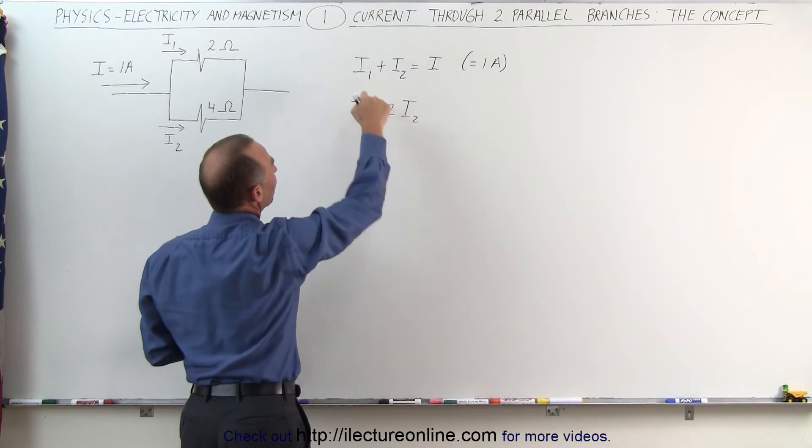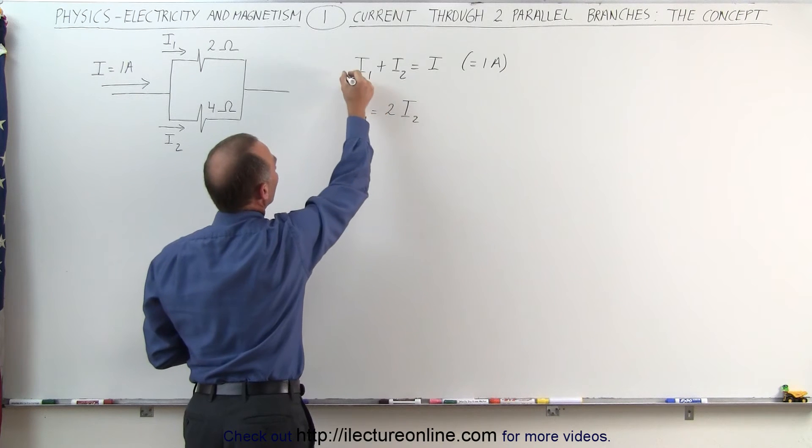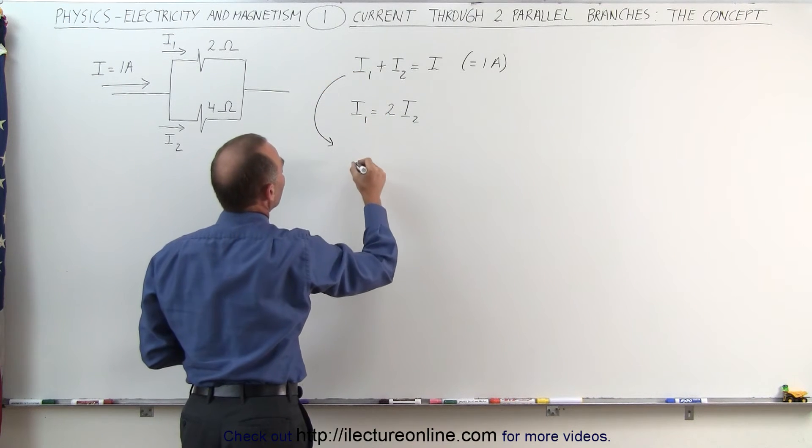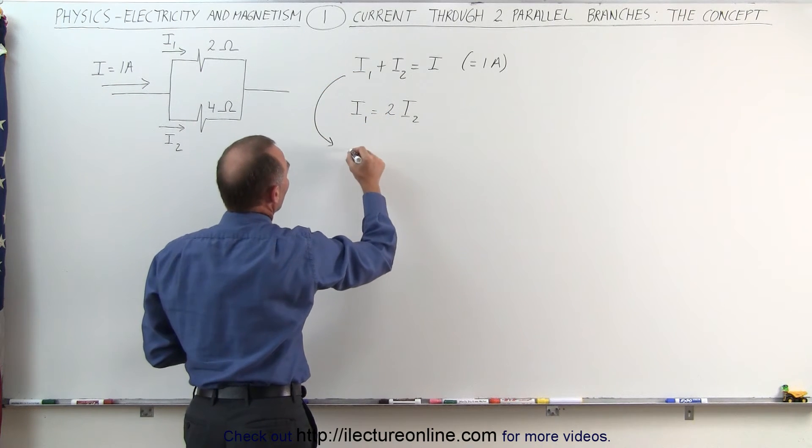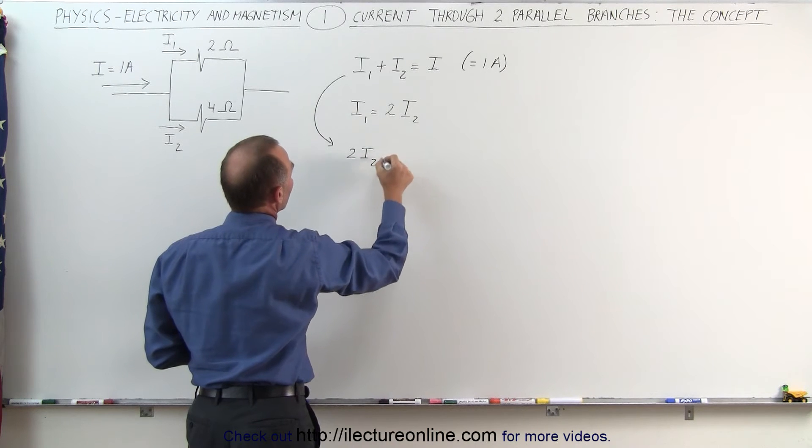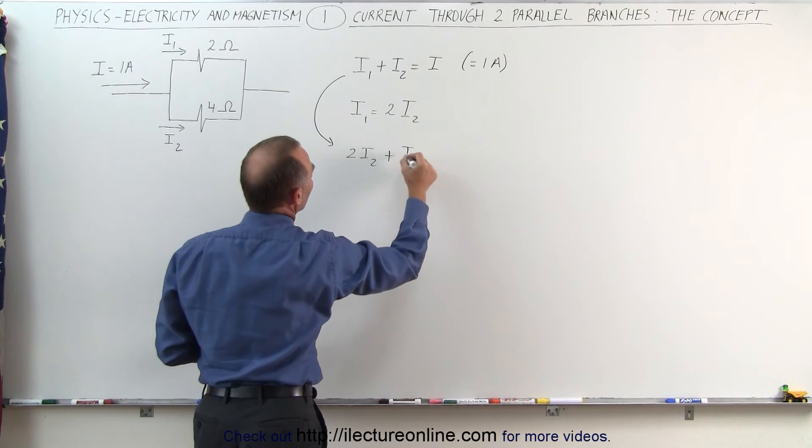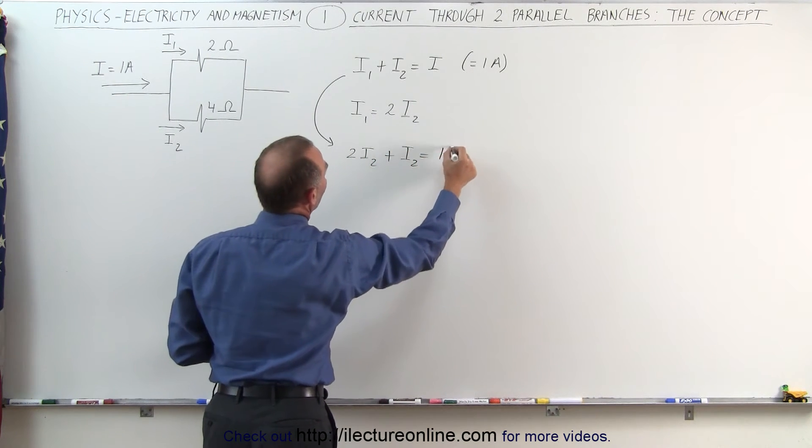If we then replace I1 by two I2 and plug that in here, we can then say that this equation then becomes, instead of I1, we'll write two I2 plus I2 equals one amp,